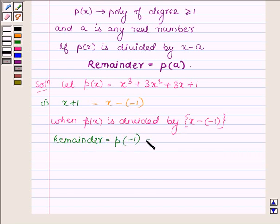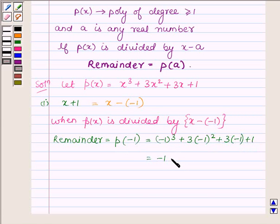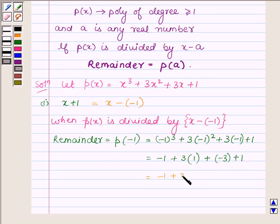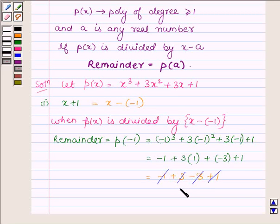p(minus 1), which is equal to (minus 1) cube plus 3 times (minus 1) square plus 3 into minus 1 plus 1. This is further equal to minus 1 plus 3 into 1 plus 3 into minus 1 plus 1, which gives minus 1 plus 3 minus 3 plus 1. The minus 3 cancels with plus 3, and minus 1 cancels with plus 1, giving us 0. Thus remainder is equal to 0.